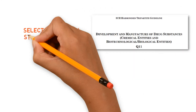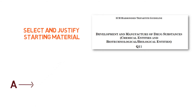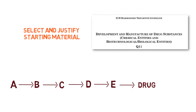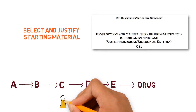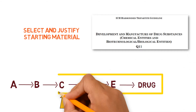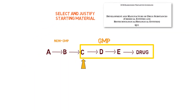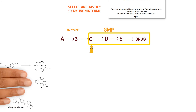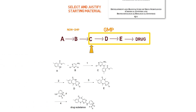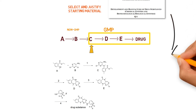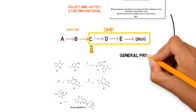ICH Q11 is the guideline which defines the criteria used to select and justify an adequate starting material in a drug substance manufacturing process. This is the compound which defines the starting point for application of good manufacturing practice. When we look at these routes of synthesis, which compound would be the appropriate starting material? According to ICH Q11, the following general principles should be considered.